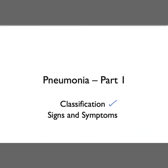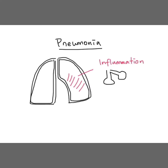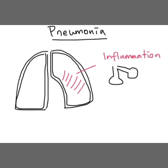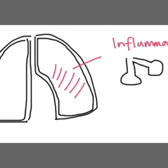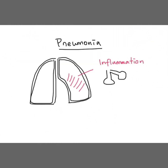Pneumonia is defined as the inflammation of the lung parenchyma. In pneumonia, the alveolar air spaces are filled with exudate and inflammatory cells. It can be caused by infection in most cases. It can also be caused by other reasons such as chemical exposure. In this segment we'll be most interested in infectious causes of pneumonia.